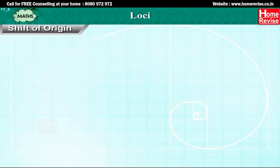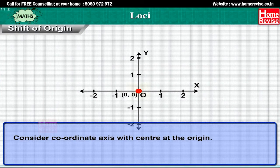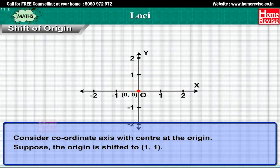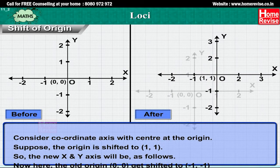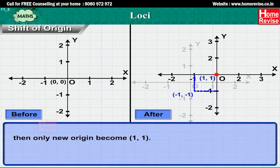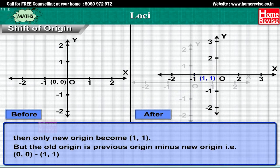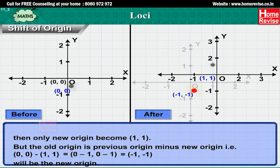Shift of origin: consider coordinate axes with center at the origin. Suppose the origin is shifted to (1, 1), so the new X and Y axes will shift accordingly. If the old origin (0, 0) gets shifted so that the new origin becomes (1, 1), then the new coordinates of the old origin become (0 − 1, 0 − 1) = (−1, −1).